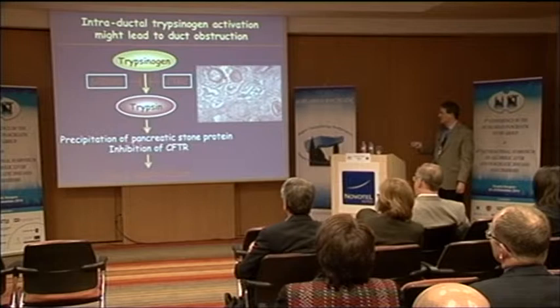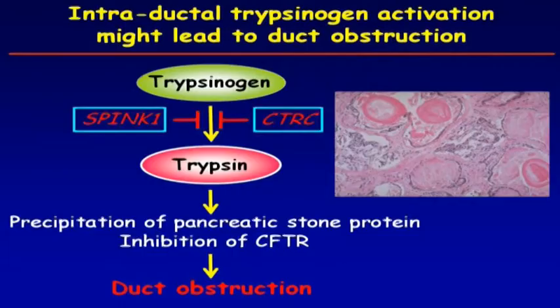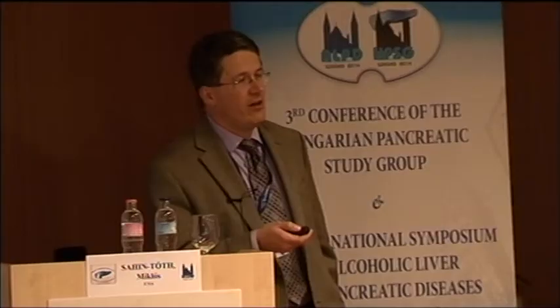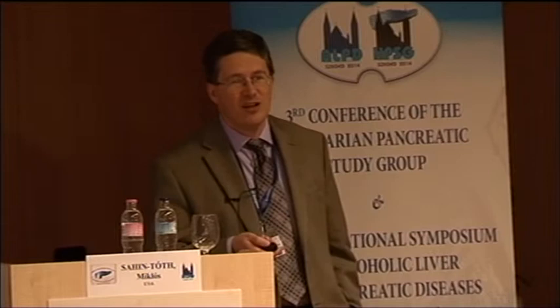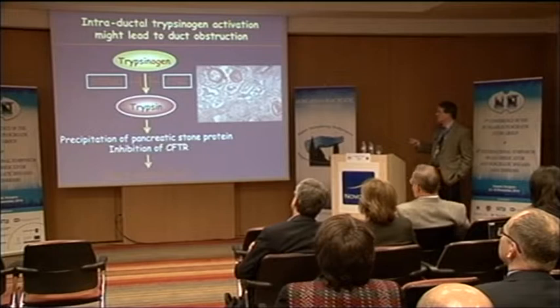One possibility — just speculation — is that maybe through precipitation of the stone protein or inhibition of CFTR there's an obstructive phenotype similar to what you see in CF pancreas, as Peter published data on this. But this is not entirely certain. I will briefly discuss the history of how we discovered that trypsinogen mutations stimulate activation of trypsinogen to trypsin.